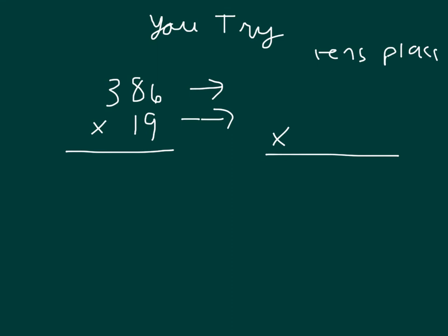386 rounds to 390. 19 goes to 20. And then for our estimate, if we place a 0 there, because we're multiplying by 2 tens, 2 times 0 is 0, 2 times 9 is 18, 8 regroup of 1, 2 times 3 is 6, plus 1 is 7. We have 7,800.